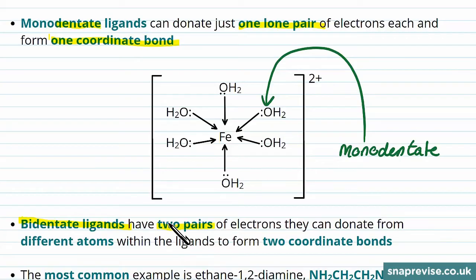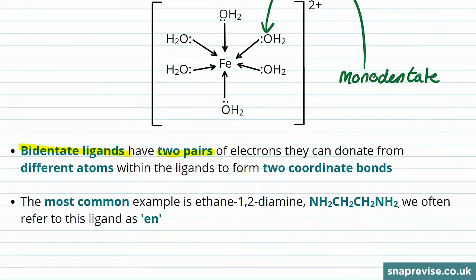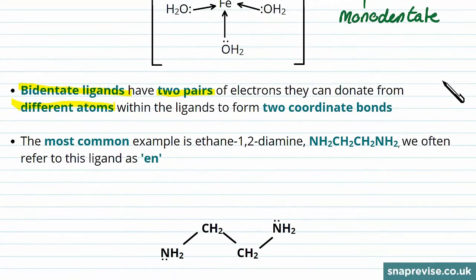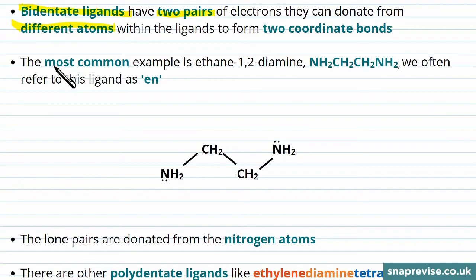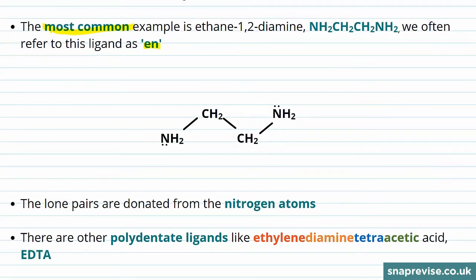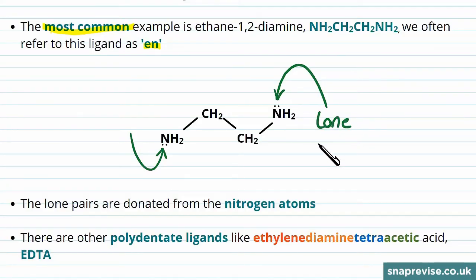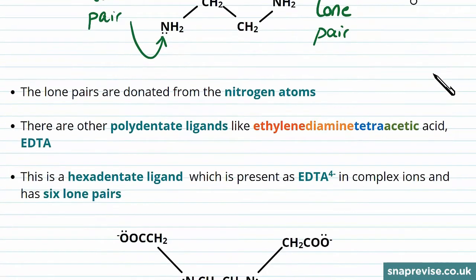Bidentate ligands have two pairs of electrons they can donate to form coordinate bonds with the central metal ion. These electrons come from different atoms within the ligand. The most common example of a bidentate ligand is ethane-1,2-diamine, which we often refer to as 'en' when drawing out complexes. We have two CH2 groups in the middle and then two NH2 groups on the end, and it's on these that we have the lone pairs of electrons for donating to form the coordinate bonds.